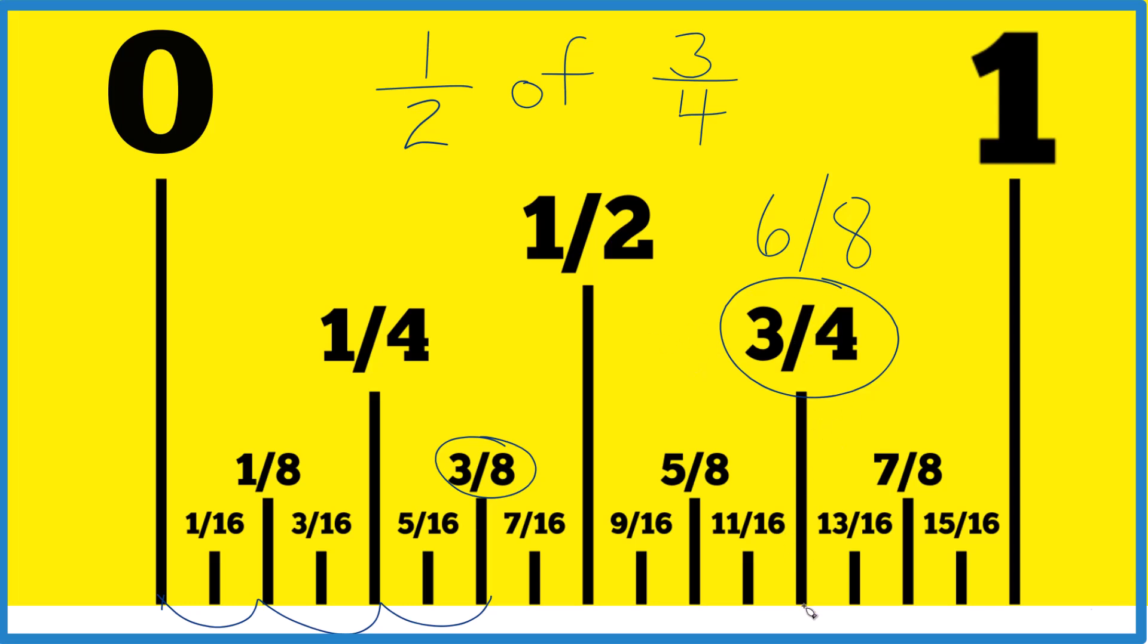If you go from this direction: one-eighth, two-eighths, three-eighths. Half of six is three. Three-eighths is half of three-fourths.